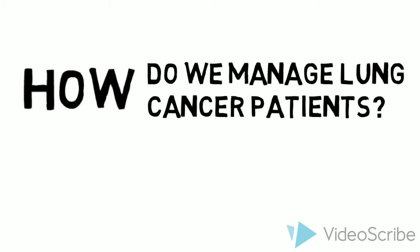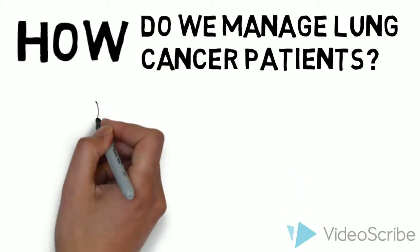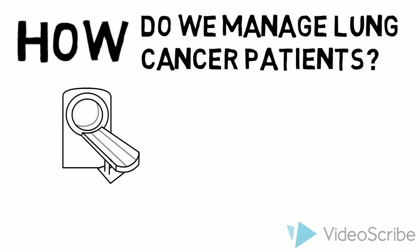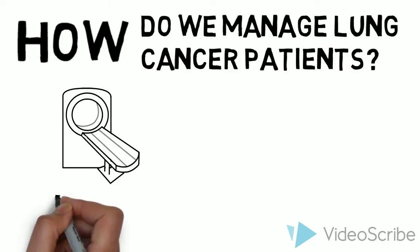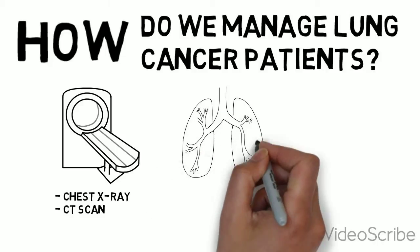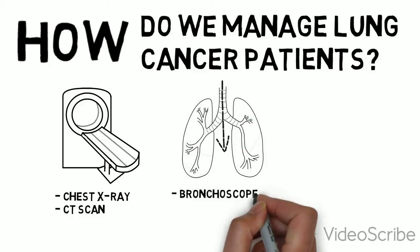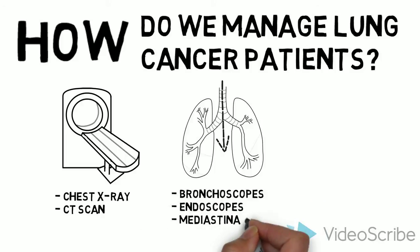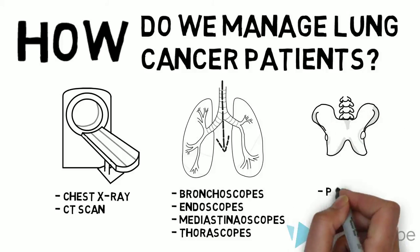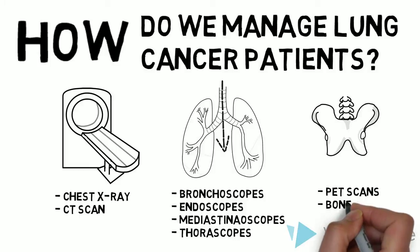How is lung cancer diagnosed and managed? Diagnosis is accomplished through imaging and tissue diagnosis. Common imaging modalities for characterizing a lung mass include chest X-ray and CT scan. Tissue can be sampled through bronchoscopies, potentially combined with endobronchial ultrasound, mediastinoscopies, or thoracoscopies. Following a tissue diagnosis, we would stage the lung cancer to assist in treatment plans, which may include additional CT scans, a PET scan, or bone scan.